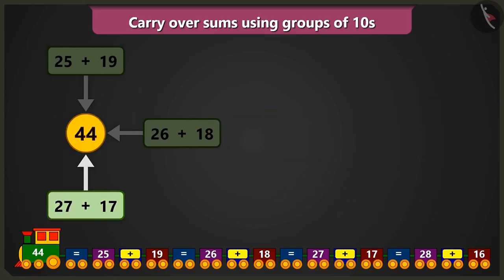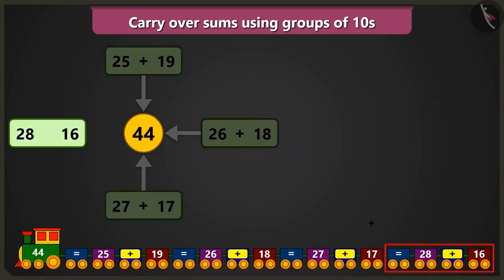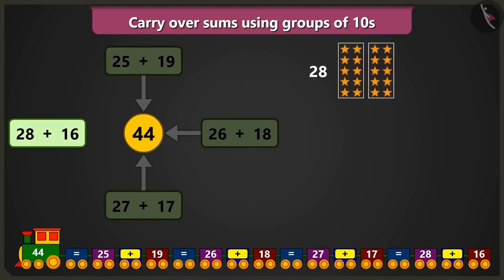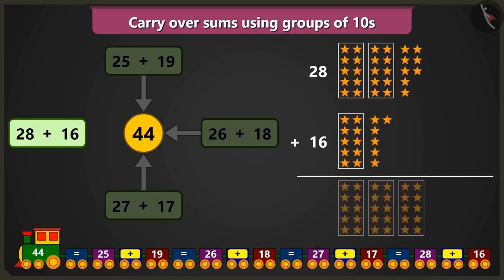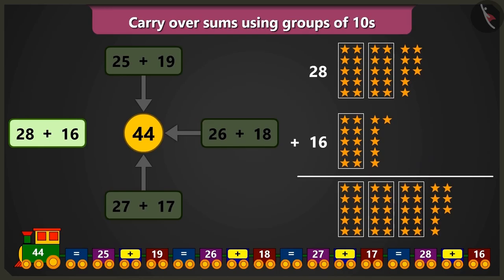Come on, Bubbly. Now, you tell me, what is the sum of 28 and 16? 28, that are 2 tens and 8 ones and 16, that are 1 tens and 6 ones. Now, we will add 8 ones to 6 ones. So, count after 8 is 9, 10, 11, 12, 13 and 14.